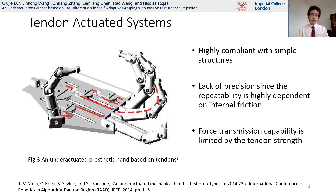There are a variety of different mechanisms applied to achieve adaptability, yet they all have their own advantages and disadvantages. Tendon-driven grippers, as one of the most common actuation methods, can provide high adaptability with simple internal structures. However, the repeatability and precision of such mechanisms is undermined as they are highly dependent on the friction inside the finger and the routing method. In addition, the force transmission capability is limited.